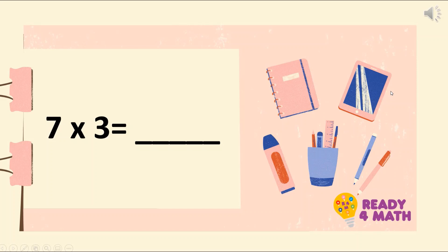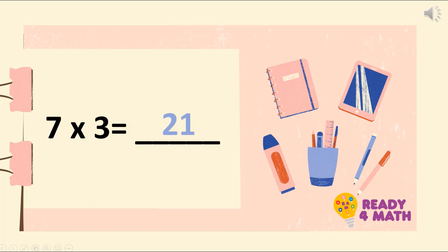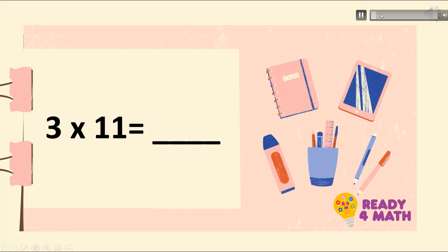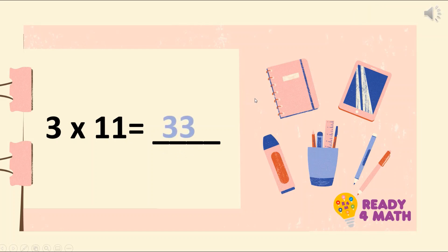What about 7 times 3? Let's skip count: 3, 6, 9, 12, 15, 18, 21. 7 times 3 is 21. Well done. What about 3 times 11? Let's skip count: 3, 6, 9, 12, 15, 18, 21, 24, 27, and 30, 33. The answer is 33. Very good. You did a very good job.